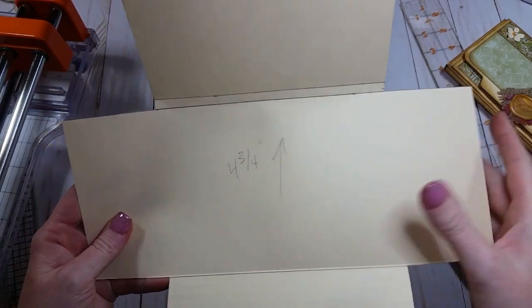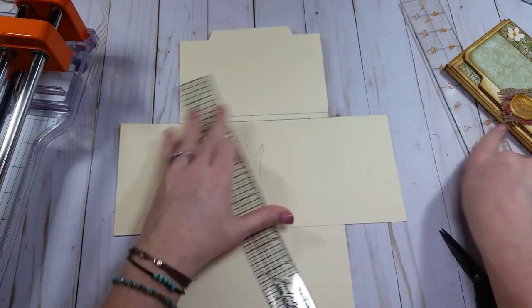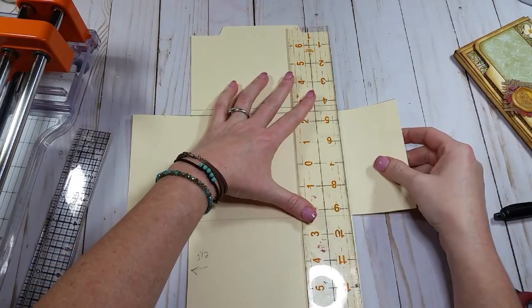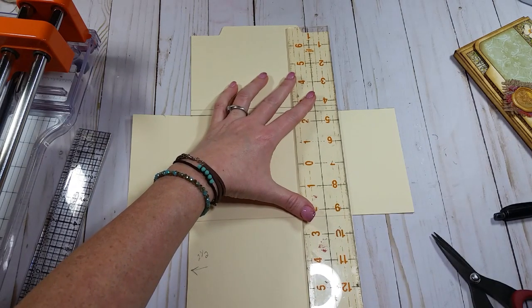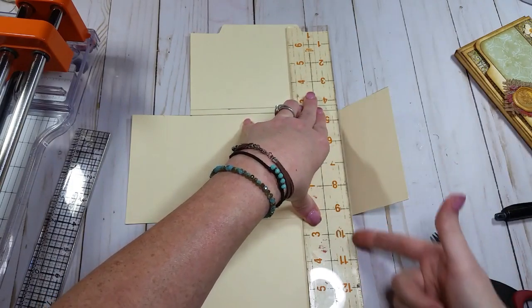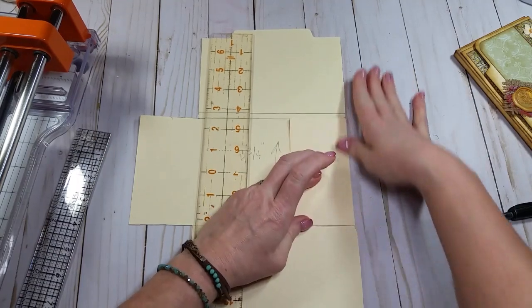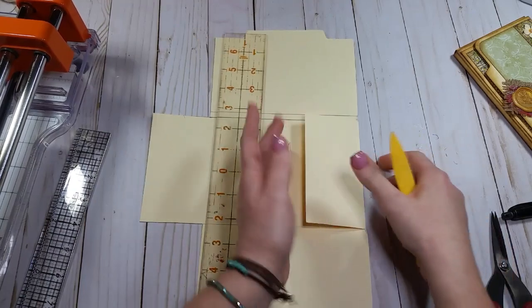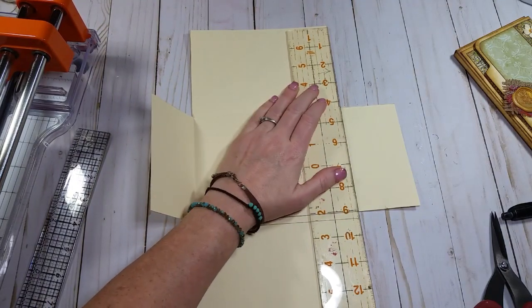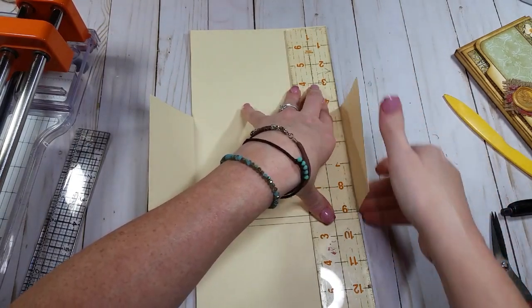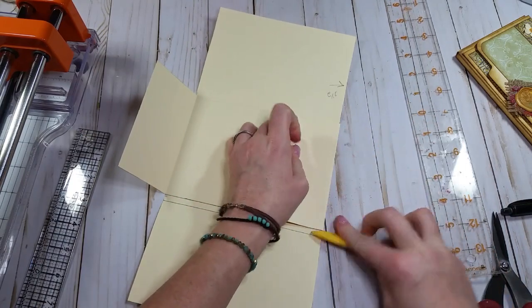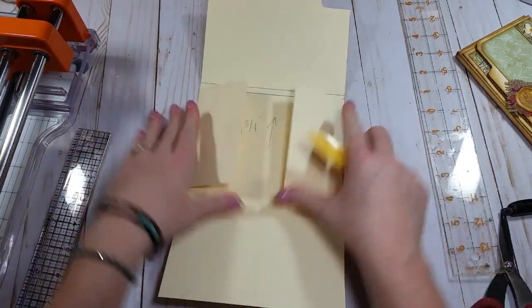And then now we're going to make these little side flaps right here, the ones that fold in. That's really easy because all we're going to do is, we're going to hold our ruler down even on this side and even down here on this side. Again, you could use your scoreboard if you wanted. So I'm holding it nice and flush on this side, nice and flush down here. Let's flip it over and do the same. So now we have our two flaps.